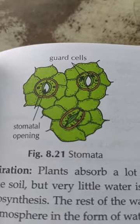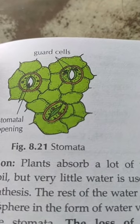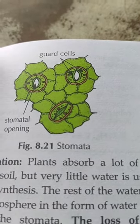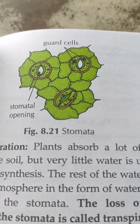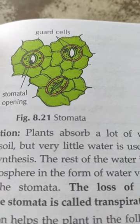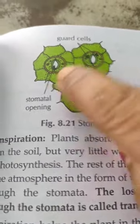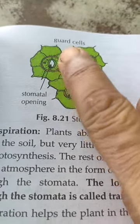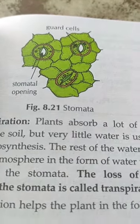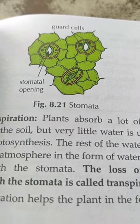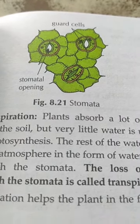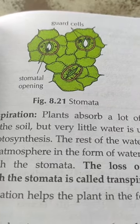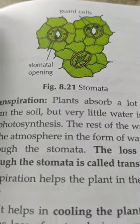Here you can see the structure of the stomata. The stomata are controlled by guard cells — the opening and closing of stomata is regulated by these guard cells. Here is the stomatal opening: when it opens, water is released; when it closes, water release stops.